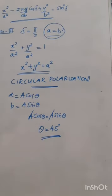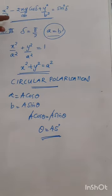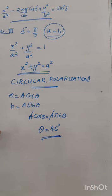This is the mathematical theory of polarization. For an examination, you will have to derive the general equation and then discuss the three cases: Case 1 gives the condition for plane polarization, Case 2 the condition for elliptical polarization, and Case 3 the condition for circular polarization. After the mathematical part, we will move on to how to produce and detect these types of polarizations.